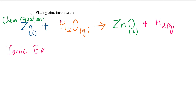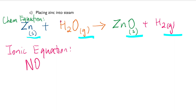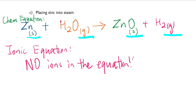What about the ionic equation? Well — you can't form an ionic equation here because there are no ions in the equation. You see solid, gas, solid, gas — no aqueous solutions at all. So for this question, there is no way to form an ionic equation. You've got to be careful every time you know the physical states. Get into the habit of writing physical states and it'll become much easier.